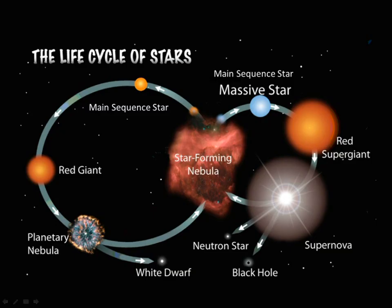To recap: stars are formed in a nebula. For a star like our sun, it grows into a protostar where the gases are heating up, then forms a main sequence star like our sun currently is — where the force of gravity is balanced with the force of the gas wanting to expand out. Most of the life of a star is spent in the main sequence stage. Eventually, as the fuel is used up, it becomes a red giant, then after more fuel is used up it turns into a white dwarf, and eventually burns out and turns into a black dwarf where there's no more light.